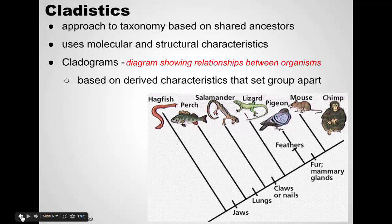The most distantly related organism in this group is the hagfish — it's a jawless fish, one of the first types of fish that ever evolved in the oceans. Then we have the evolution of the jaw at some point. All of these other species share that derived characteristic — they all have a jaw. As we continue moving up, we have the perch. In evolutionary history, we had the development of lungs eventually, so we split off the perch. Now all of these organisms have that derived characteristic — they all have lungs — and claws or nails and fur, mammary glands, and so forth.